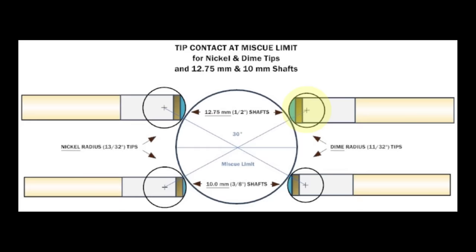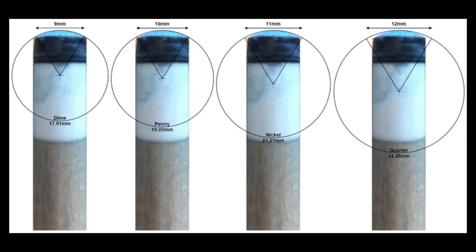On a larger diameter shaft, the tip doesn't need to be as round to maintain good contact over the full range of spins. To prevent tip edge contact, the diameter of the shaft needs to be big enough based on the shape of the tip. This diagram shows the minimum required shaft diameter for each tip shape to span the full range of spins. A dime radius works on any shaft larger than 9 millimeters. With a quarter radius, the shaft diameter needs to be at least 12 millimeters to prevent edge contact.